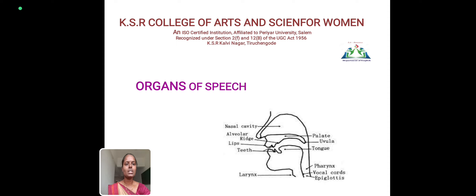The organs of speech include the nasal cavity, alveolar ridge, lips, teeth, palate, uvula, tongue, larynx, pharynx, vocal cords, and epiglottis. These are the organs of speech.